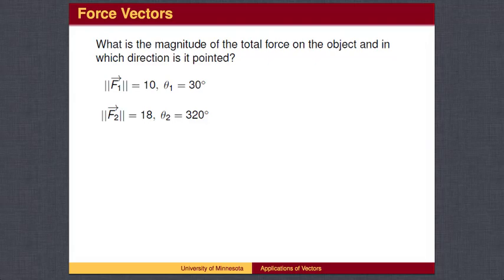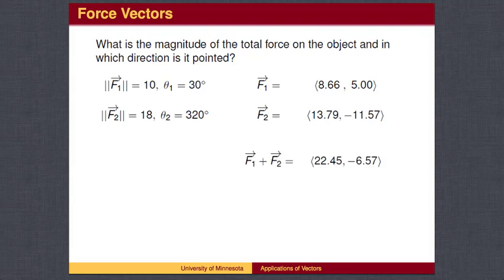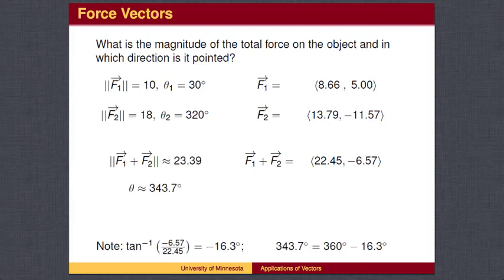The answer is, we don't add the vectors in polar form. The best way to find the sum of forces is to first convert to rectangular coordinates, then add the coordinates, then convert back to polar coordinates. The total force is 23.39 newtons and is pointed in the direction 343.7 degrees.